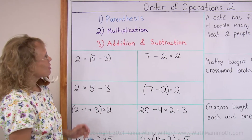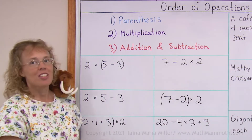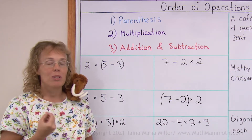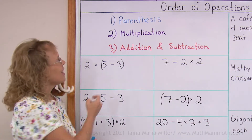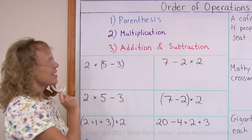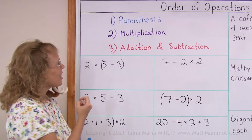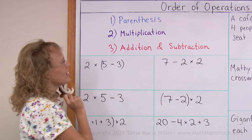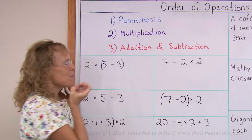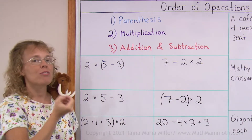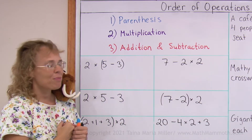I wrote it here again: first we solve what is within parentheses, then next comes multiplication, and then addition and subtraction. Those two are on the same level — we do them from left to right if there are many.